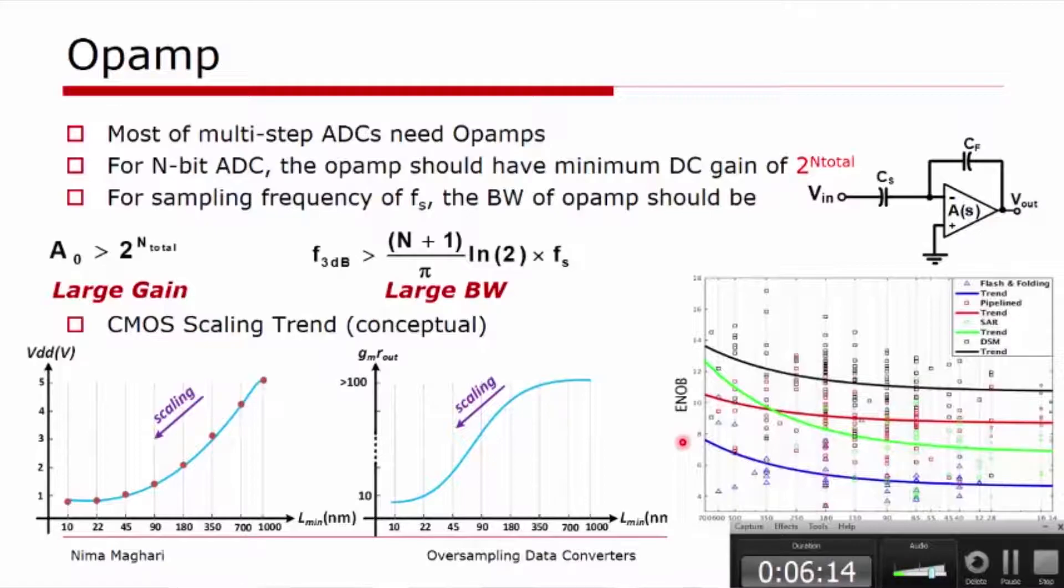Now you can see here that the resolution has been declined in a sense, the effective number of bits has been declined. This does not necessarily mean that the new architectures are not suitable for analog to digital converter, but rather that we have moved to using larger bandwidth instead of trying to get larger dynamic range or effective number of bits.